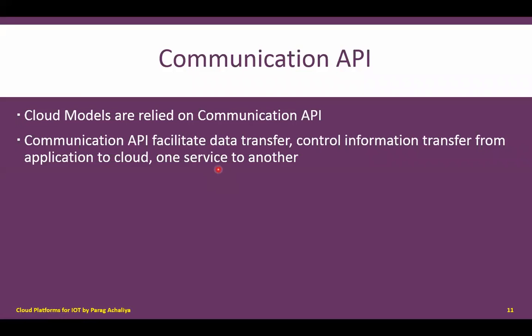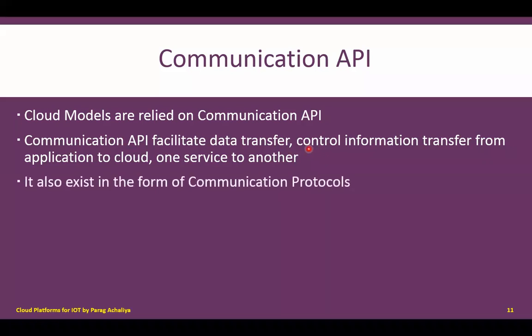The task of a communication API is to support data transmission — transferring data from one node to another. It also focuses on controlling various information related to data transmission, and the different services required for data transmission are also part of the communication API.